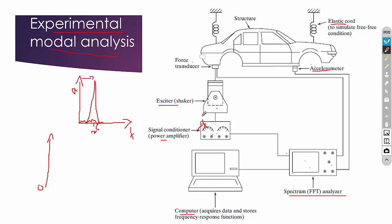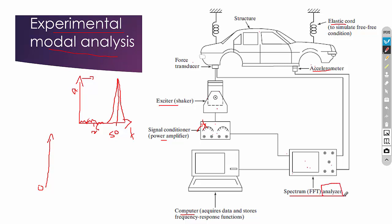The first large peak identifies the first natural frequency of the system. Continuing to increase the frequency, for example when it reaches 50 Hz, another peak appears at 50 Hz — that is the second natural frequency. In this way, you can identify any number of natural frequencies. The frequency plot is viewed on an FFT analyzer, which converts the time-domain signal into the frequency domain. This is how experimental modal analysis identifies the natural frequencies of any system.